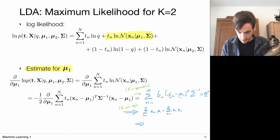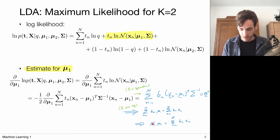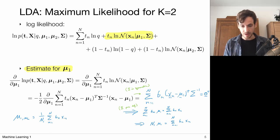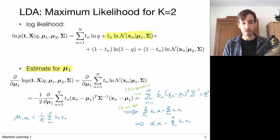Setting the derivative to zero and noting that sigma is positive definite — so it never causes the expression to be zero on its own — we move the x_n terms to the right and keep mu_1 on the left. The sum reduces to N_1·mu_1 equals the sum of t_n·x_n, where N_1 is the number of times t_n equals 1. Therefore the maximum likelihood solution for mu_1 is (1/N_1) times the sum of t_n·x_n — the sample mean over all points in class 1.